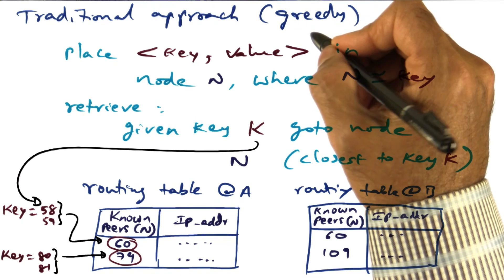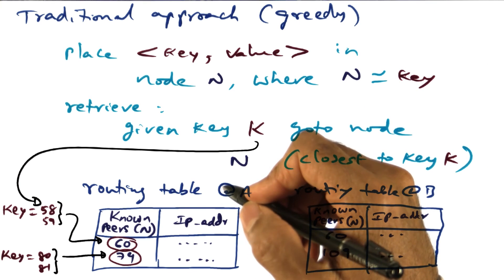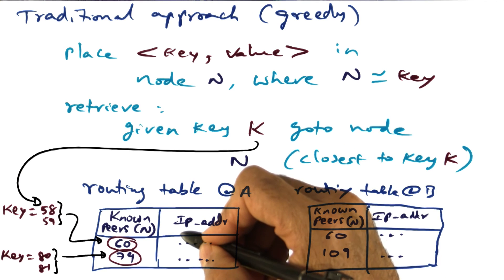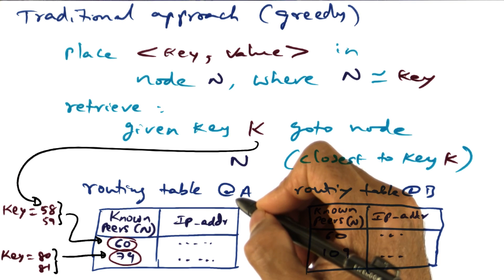So in other words, in the greedy approach, we are trying to get to our desired destination as quickly as possible with the minimum number of hops to get to the desired destination. And when I say the number of hops, it is at the level of the virtual overlay network, not in terms of the physical network.